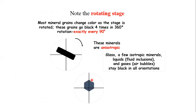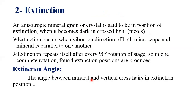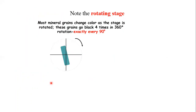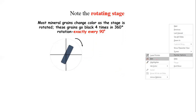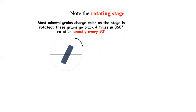What is the extinction angle? The angle between the mineral grain and the vertical cross hair in extinction position is termed as the extinction angle. Suppose this is a mineral grain in an extinction position — the angle it makes with the vertical cross hair is called the extinction angle.